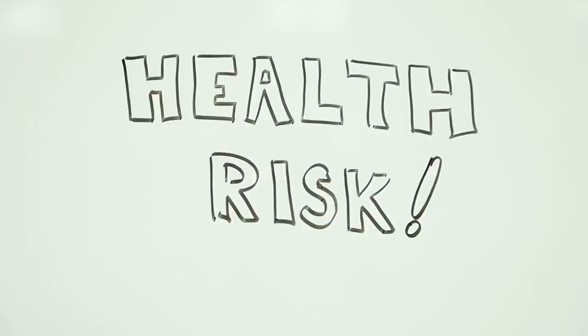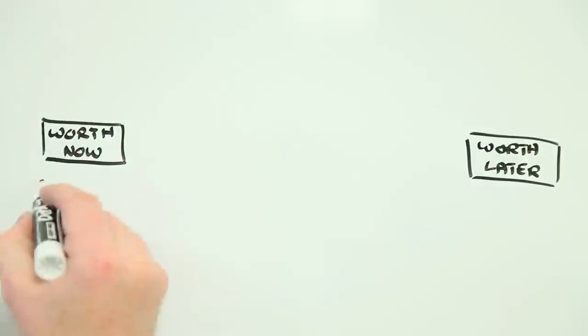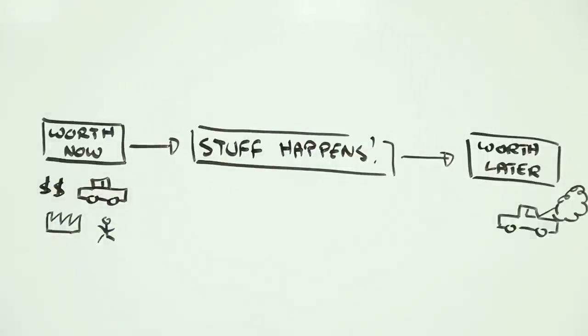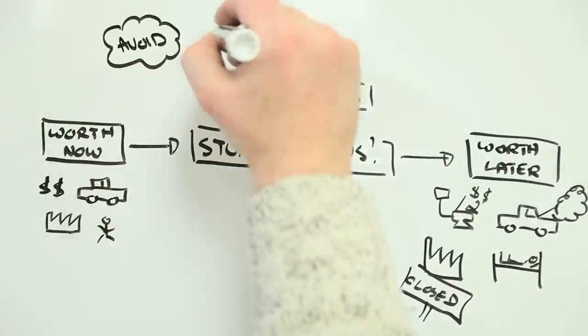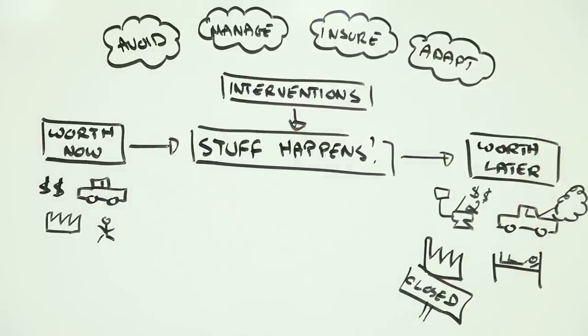To recap, things that are important to us have worth. Bad stuff happens and that worth is diminished. We can reduce this loss of worth or its impacts through avoidance, insurance, or adaptation.